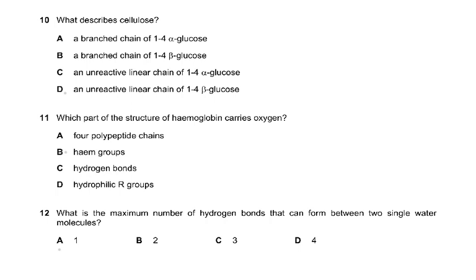Question 10: What describes cellulose? Cellulose contains beta glucose, so all options referring to alpha glucose are immediately wrong, leaving B and D. Option B says it is a branched chain — that is incorrect; cellulose is an unbranched linear chain. The answer is D: it is a linear chain of 1-4 beta-glucose joined together, which gives it strength through microfibrils and macrofibrils.